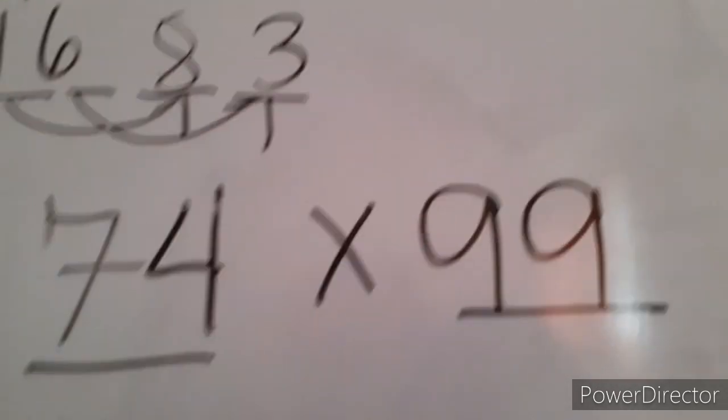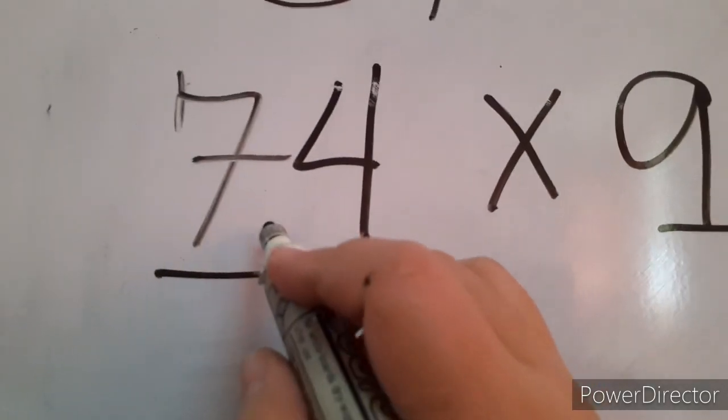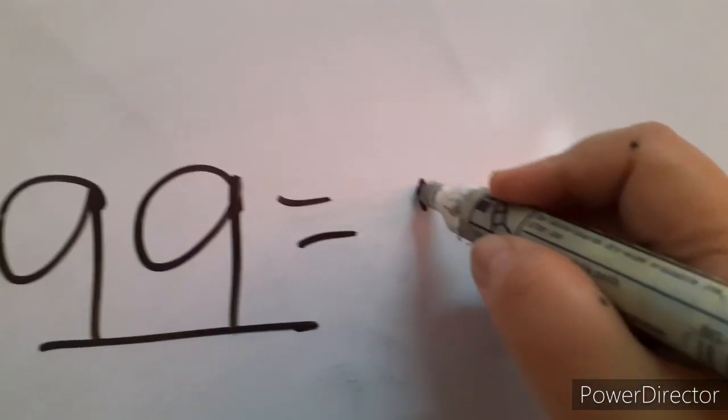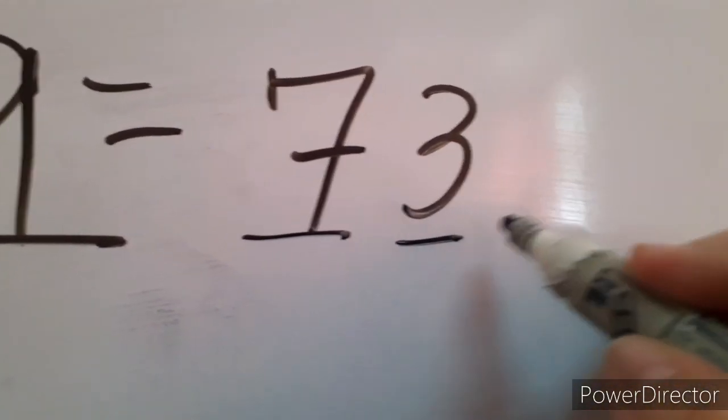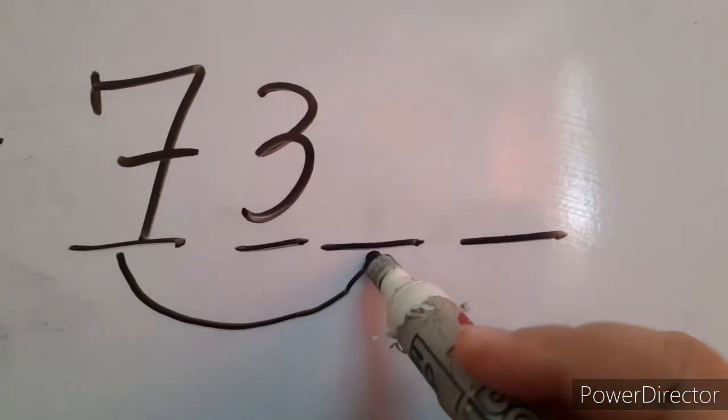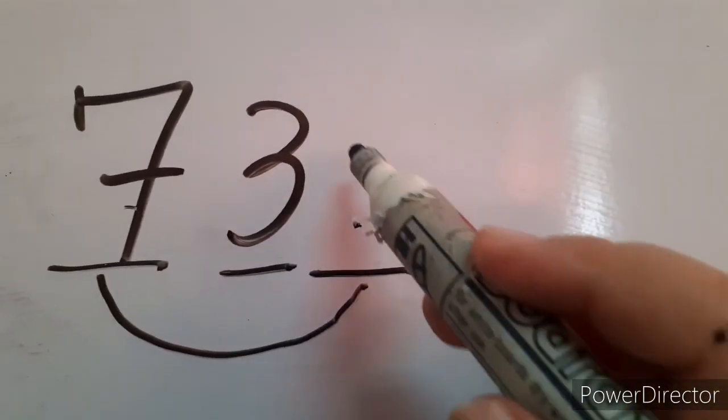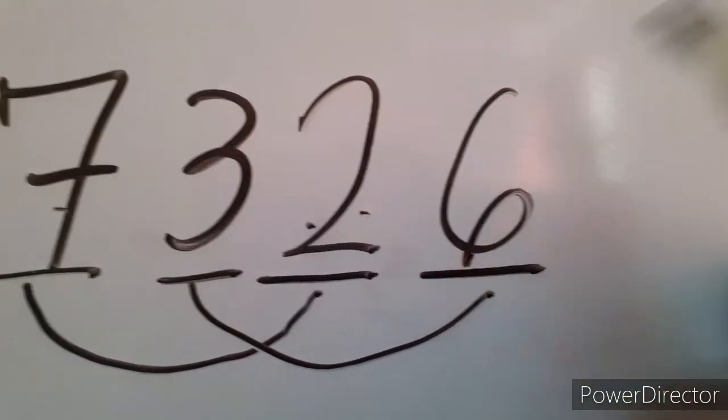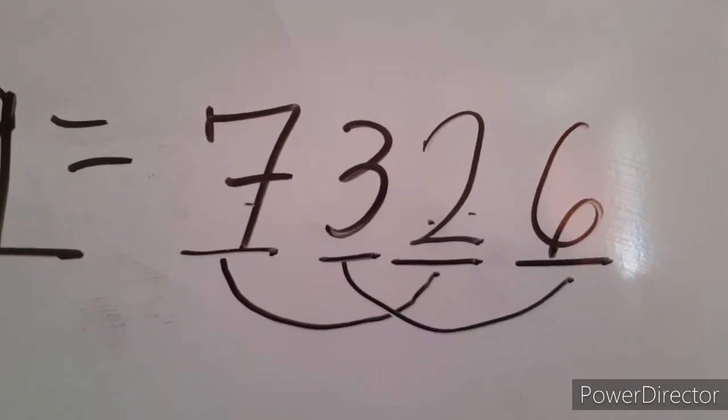How about 74 times 99? Let's do the same technique. 1 number smaller than 74 is 73. So, let's just put here 73. Next. There are 2 digits. We need 2 digits that when we think of a pair of the given, it will give us 9. 7 plus blank is equal to 9. And yes, that's 2. Next. 3 plus blank is equal to 9. That is 6. Therefore, 74 times 99 is 7,326.